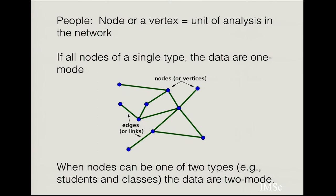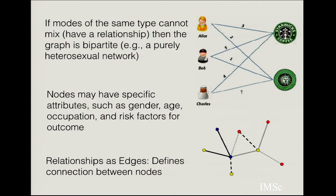In the context of public health, a person would be a node or vertex — a single unit of analysis in the network. If all nodes are of a single type, the data is one-mode. When nodes can be of multiple types — for example, students and classrooms — it is two-mode, three-mode, or multi-mode. If modes do not mix within the same type, the graph is bipartite. You can also assign specific attributes to nodes such as gender, age, and occupation, and similarly assign complex properties to edges.